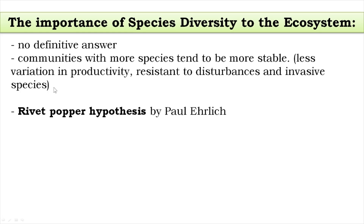David Tilman found that a particular plot — an area of land — with more biodiversity tends to have more productivity and tends to be more resistant to changes, living with less variability. However, there is still no definitive answer as to why biodiversity is important to the ecosystem.